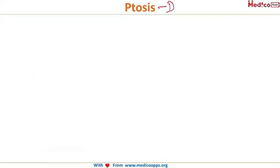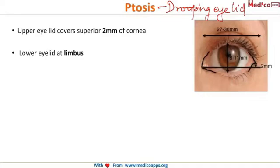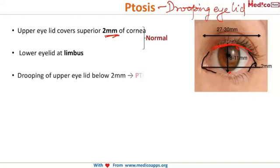Now let's look at this disease called ptosis. Ptosis means drooping of the eyelid. Some quick facts about the anatomy of the eye: the upper eyelid covers 2 mm of the superior cornea, whereas the lower eyelid does not cover the cornea — it is just at the limbus.